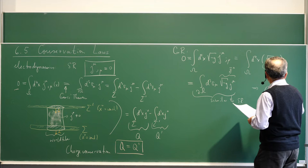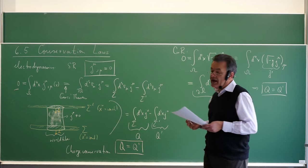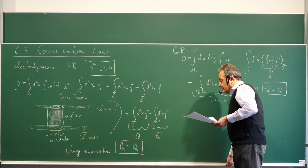Similar to the special relativity situation, if this is zero we can argue as before that charge is conserved, getting Q = Q'. So electric charge conservation survives going from special to general relativity, as it must because the consistency of electrodynamics is based on that property.